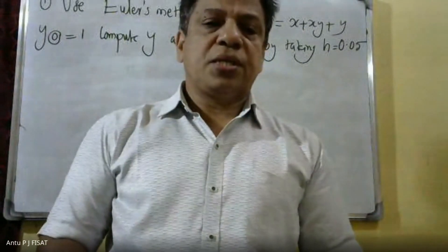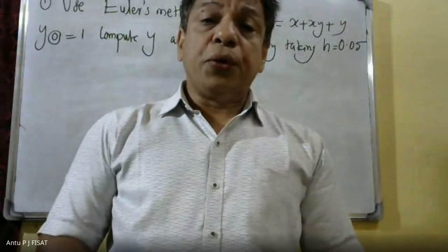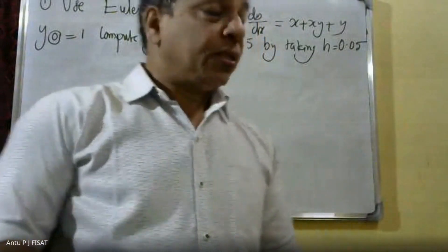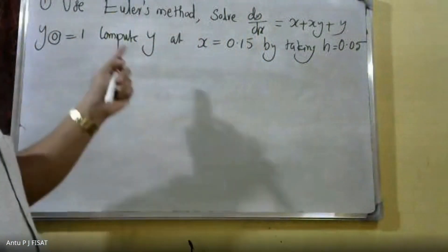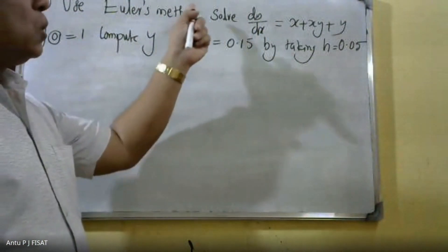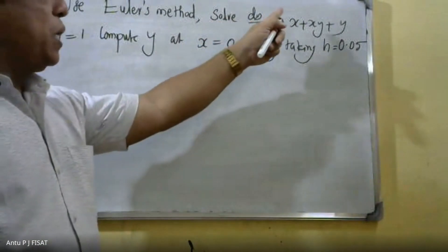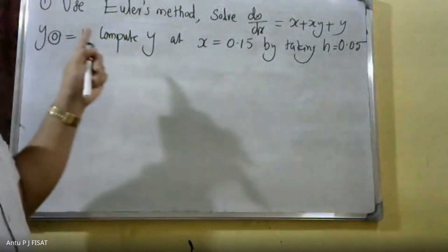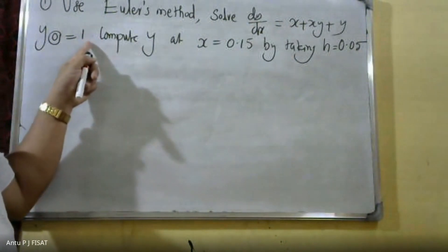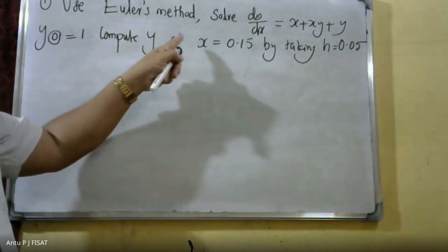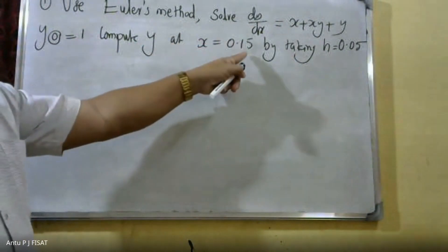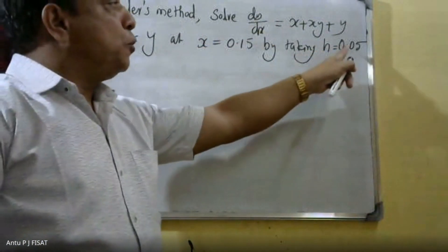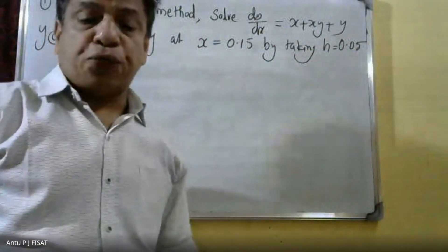Good morning students. We will solve one problem using the Euler method. Using Euler method, solve dy/dx = x + xy + y, where y(0) = 1. Compute y at x = 0.15 by taking h = 0.05.